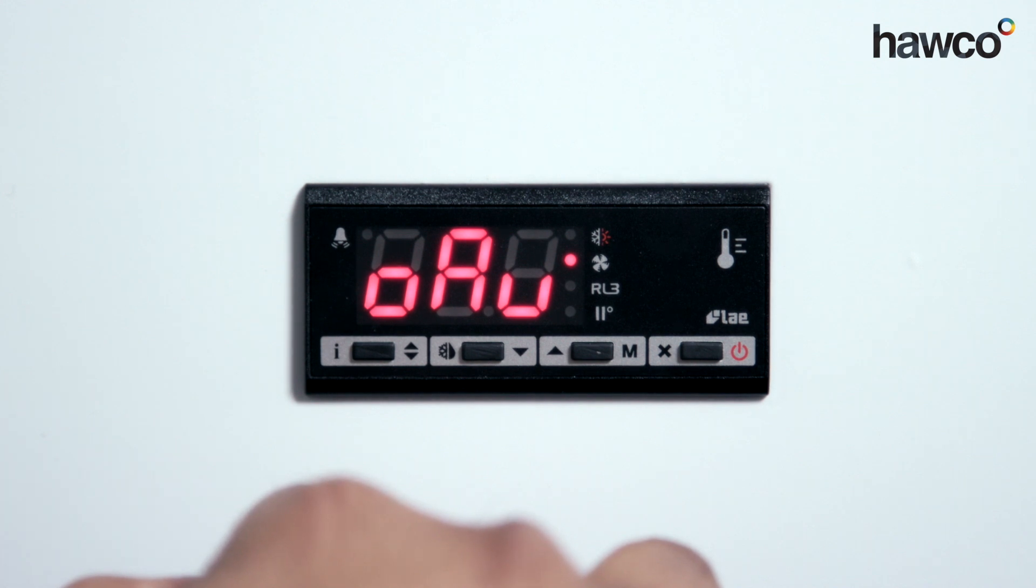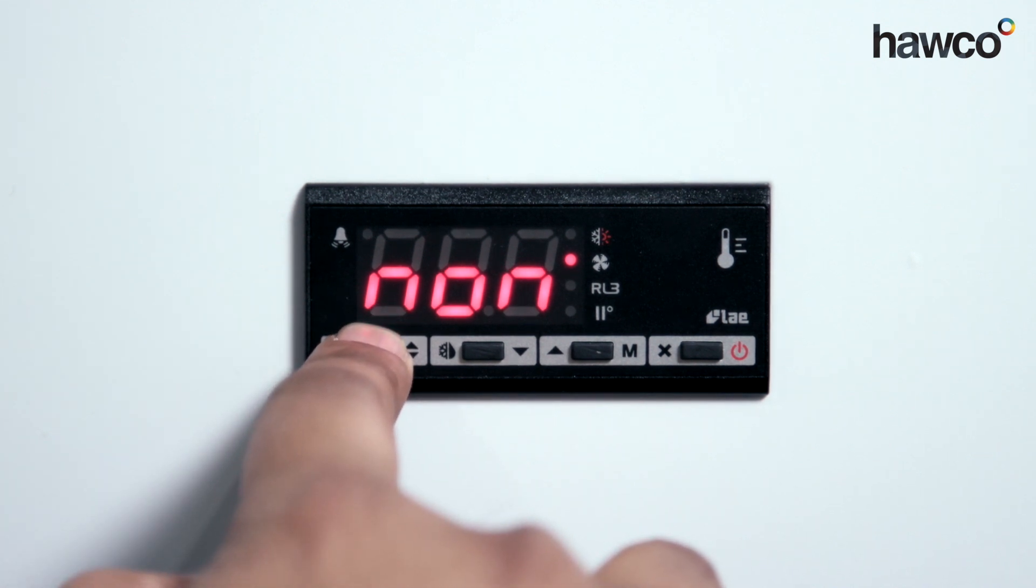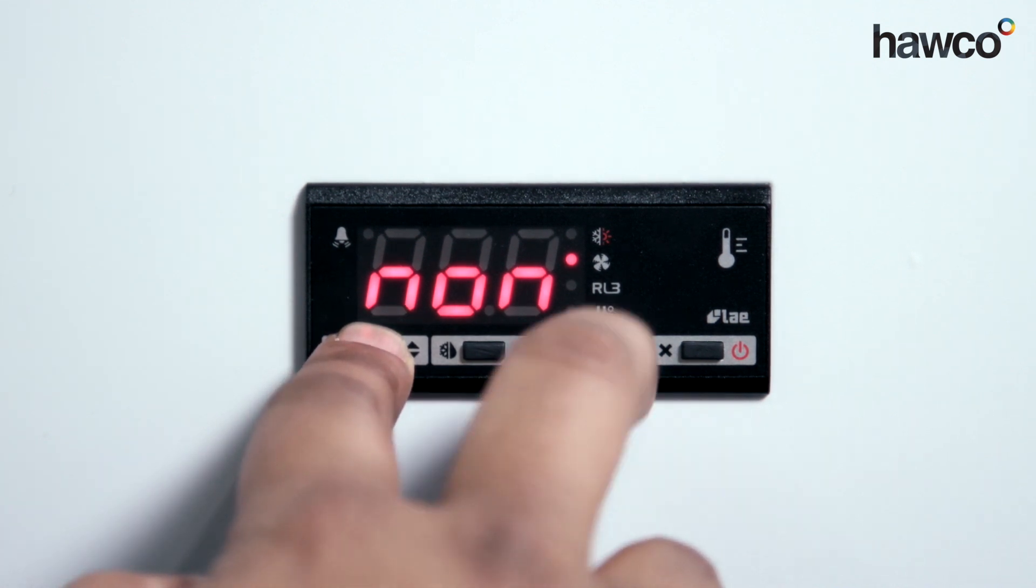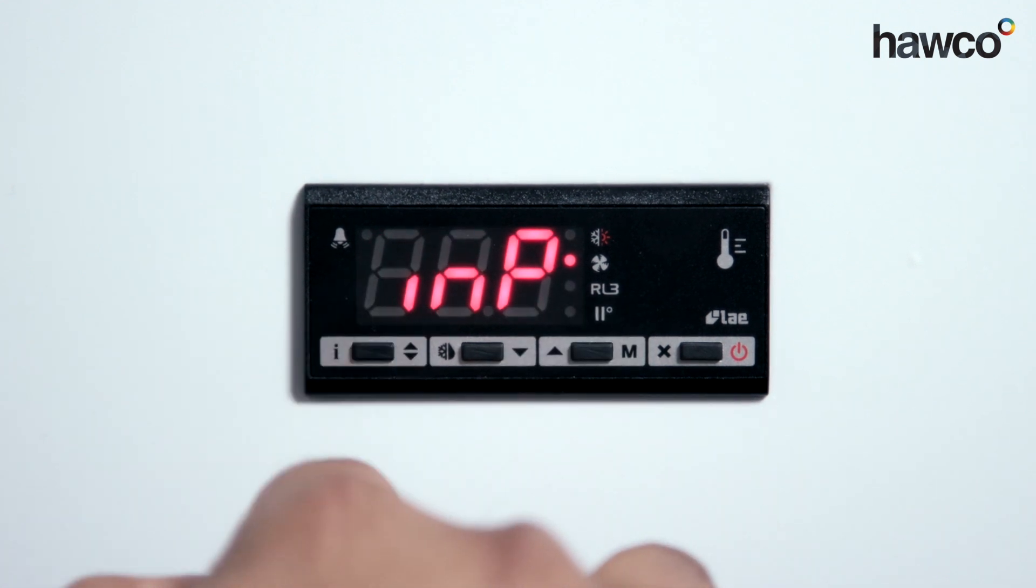The next parameter is OAU. Push and hold the button. It says NON for non-functioning, we need to set it to LGT for light. That means we've set the Relay 3 or the auxiliary relay to work as a light switch.